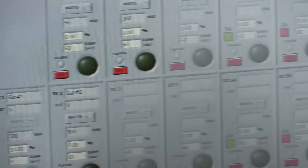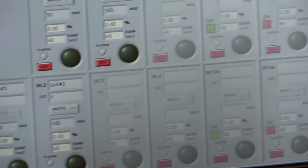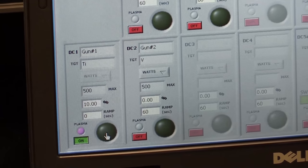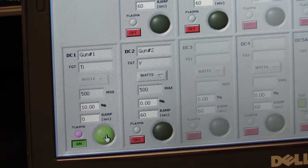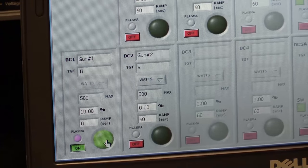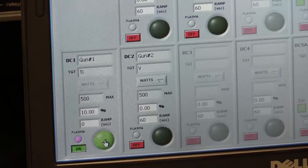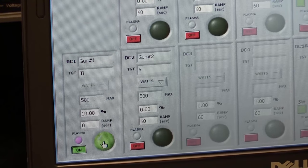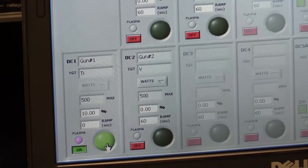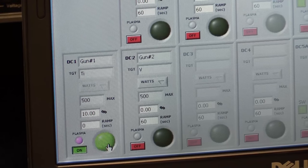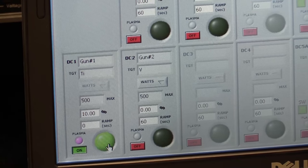Now we'll go ahead and deposit the film by opening this chimney shutter. With this green light, it shows that we are depositing our thin film on our substrate. Typically we do this for anywhere from a few minutes to possibly hours, depending on the desired thickness. For this video, we'll just do this more quickly.